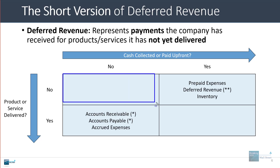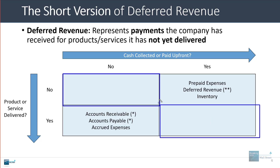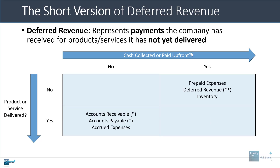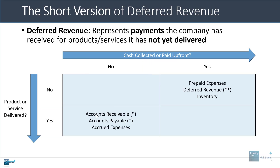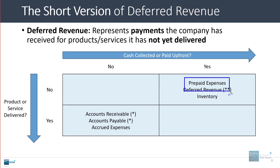When you have 'no' for both or 'yes' for both, you don't really need anything because there are no timing differences. Timing differences emerge when cash has been collected or paid but the product or service has not yet been delivered, or when the product or service has been delivered but there's been no cash collection. In that category are items like accounts receivable, accounts payable, and accrued expenses. On the opposite end, you have prepaid expenses, deferred revenue, and inventory — cases where cash payment has been made but delivery hasn't occurred.